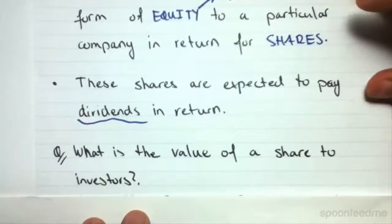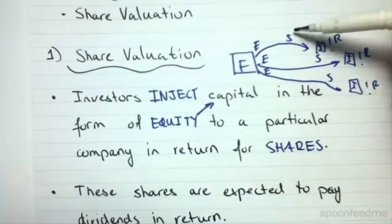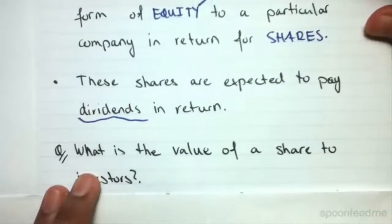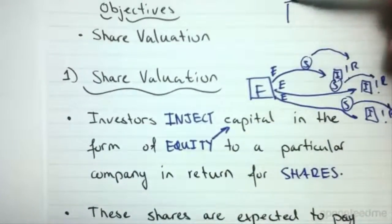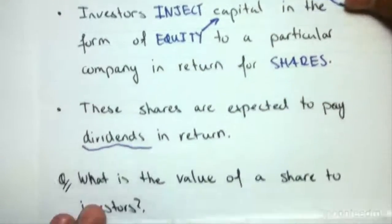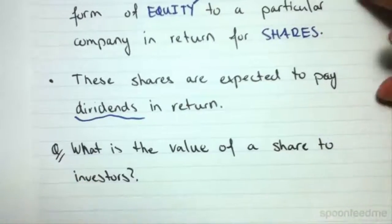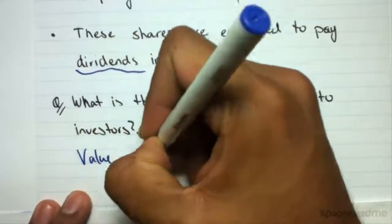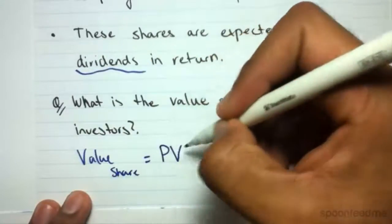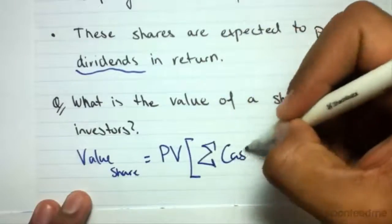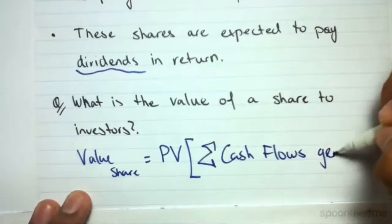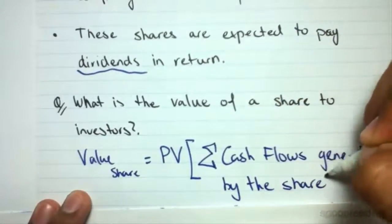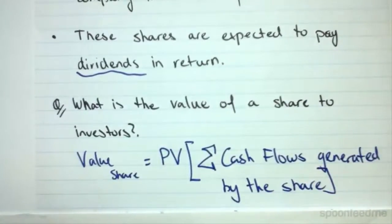The question is: what is the value of a share to an investor? If an investor gives a firm equity and gets shares in return that pay dividends, how much are these shares actually worth? Should I be investing in this firm, or is there another firm I should invest in instead? The value of a share is simply the present value of the sum of the cash flows generated by the share.